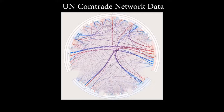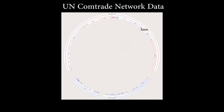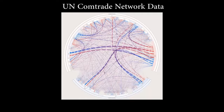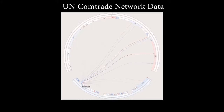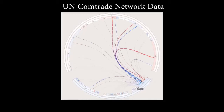Thus, we start by creating a radial layout based on the given hierarchy. Referring to a state's development status, the first level is divided into Global North and Global South. The Global North consists of high-income economies such as the United States, Canada, Western Europe, and developed parts of East Asia. On the other hand, the Global South is made up of Africa, Latin America, developing Asia, and the Middle East.